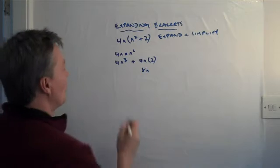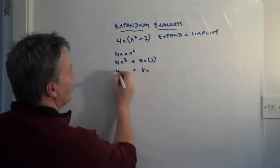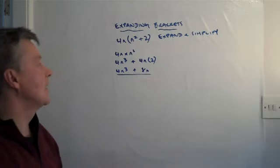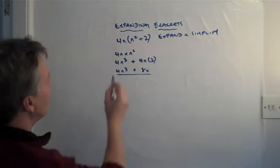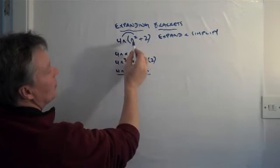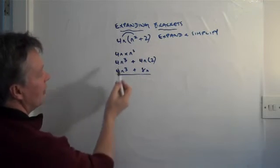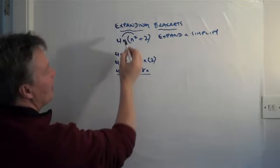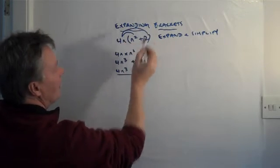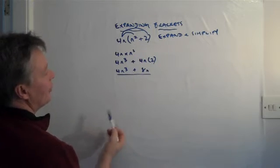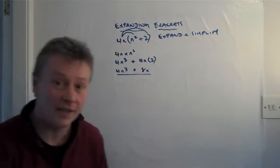Okay, so add that now to 4n cubed and that's our answer. So if you look at this, what we've done is we've multiplied that first bracket, 4n, multiplied by n to the power of 2, and we've worked out that's 4n to the power of 3. And then we've multiplied that second term, which is 2 multiplied by 4n, and we've worked that out as 8n.